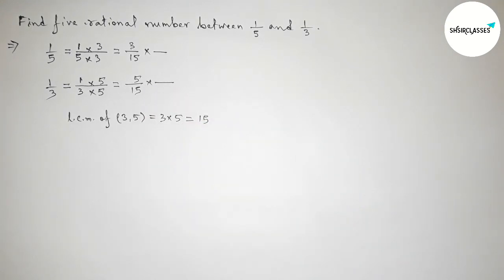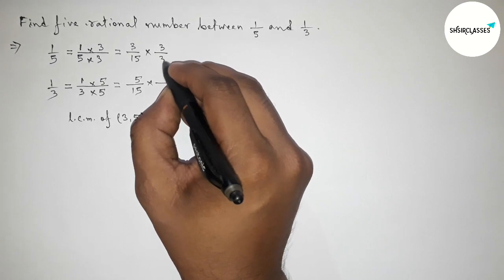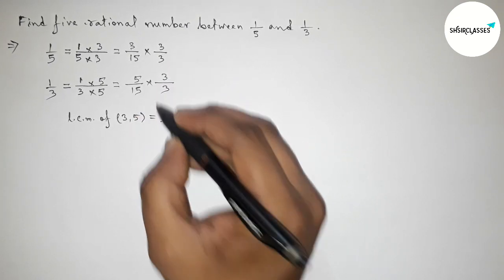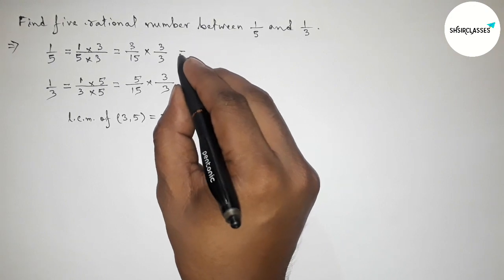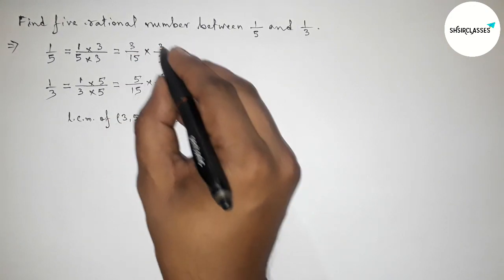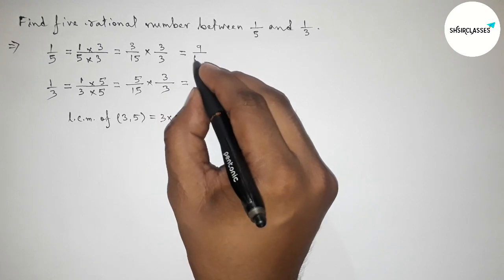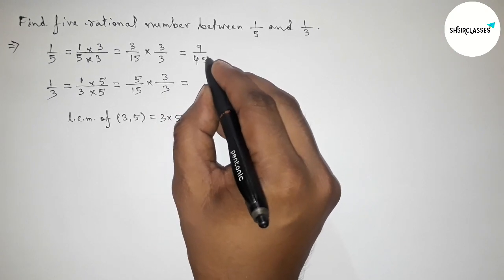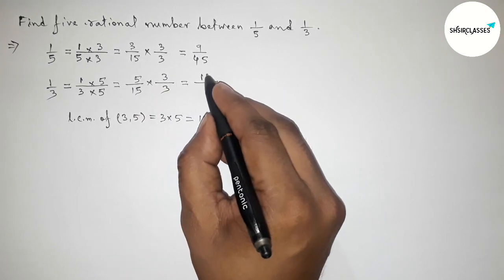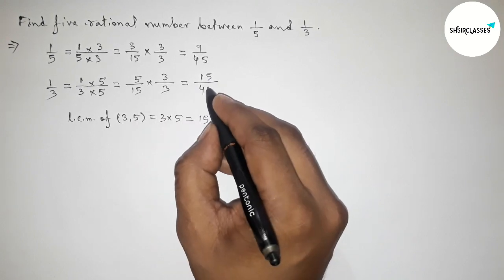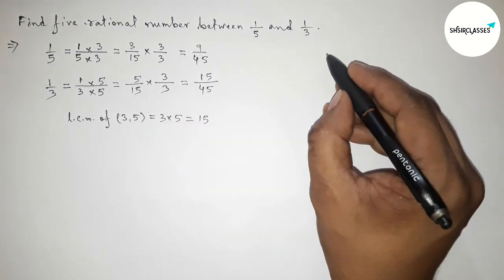To find five rational numbers between them, we multiply both fractions top and bottom by 3. So 3/15 becomes 9/45, and 5/15 becomes 15/45.